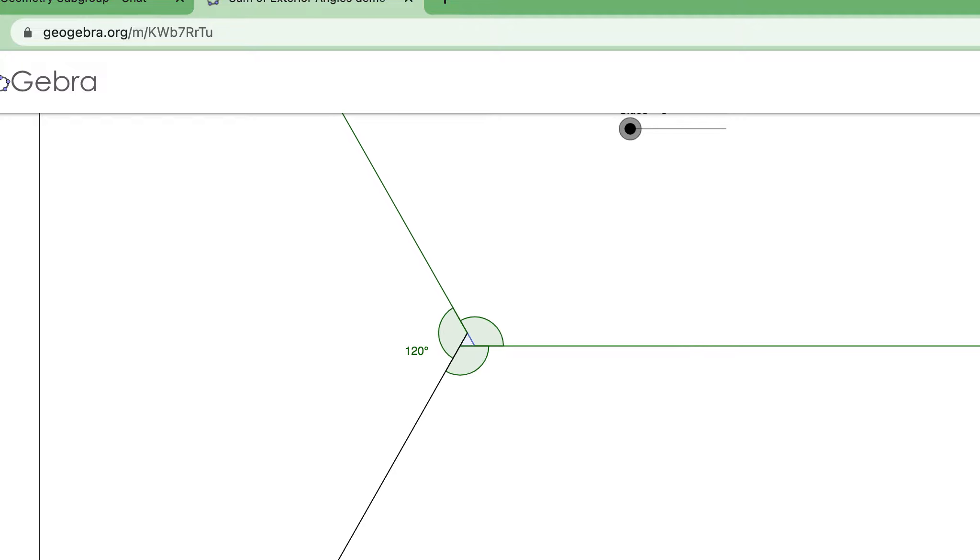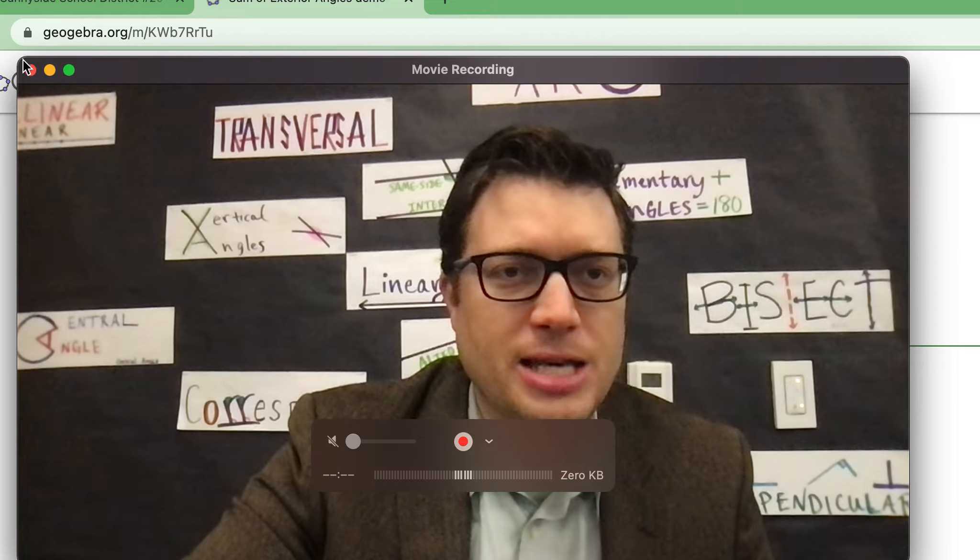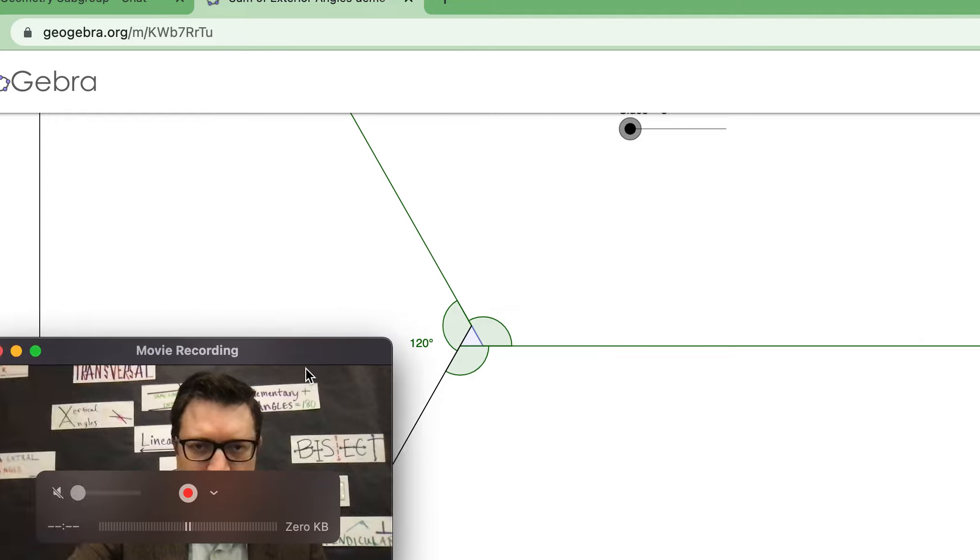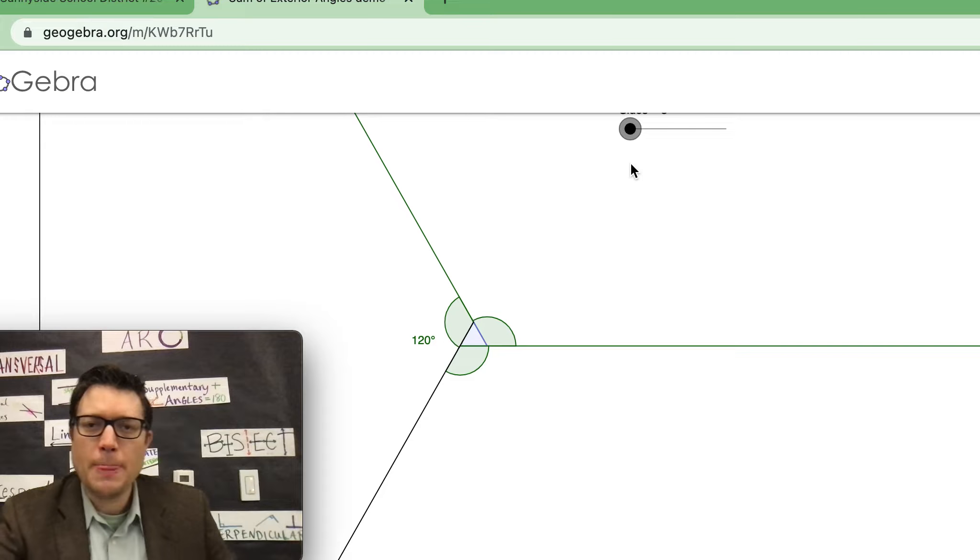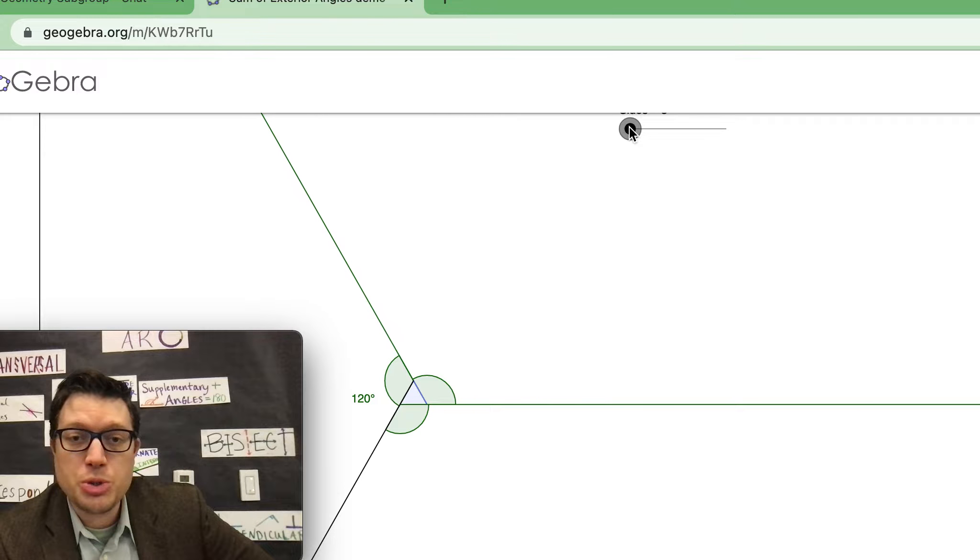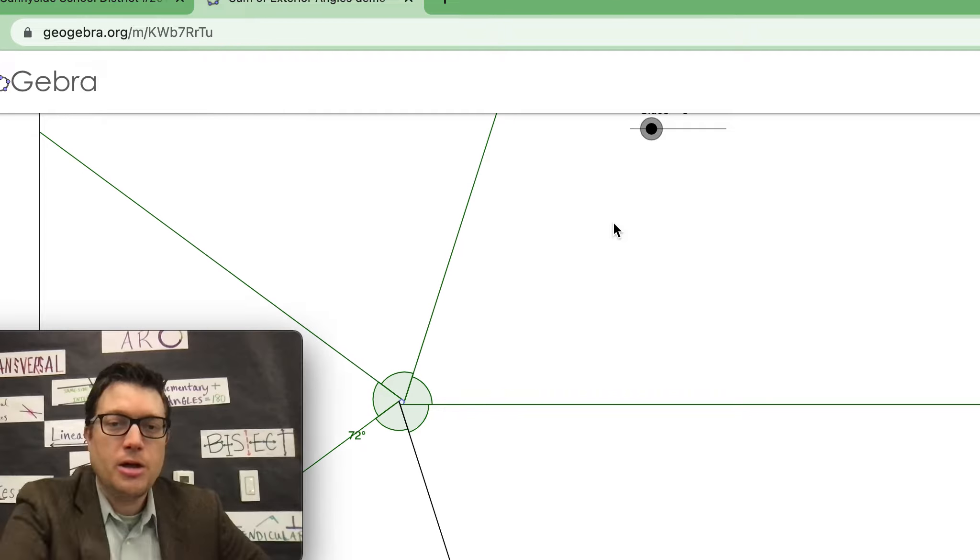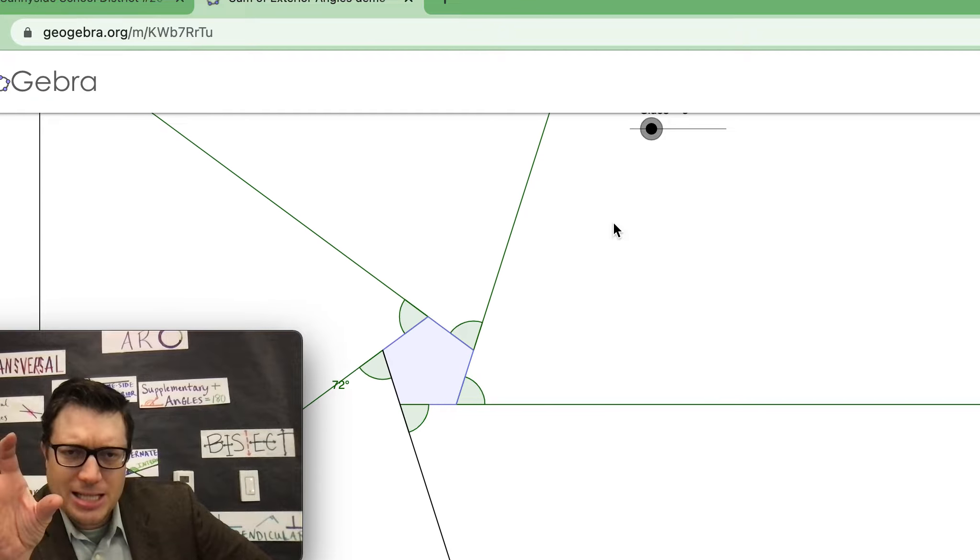And I want you just to sit there and observe for a minute what happens with the exterior angles of this polygon. This polygon, in this case, is a triangle. Let me move my face over to the side. So I'm going to change the number of sides from a triangle to a quadrilateral. And we're only focusing on what happens to the exterior angles of the polygon. You see that in that pentagon.